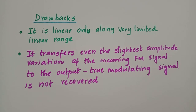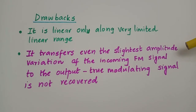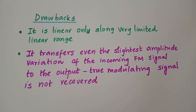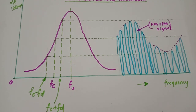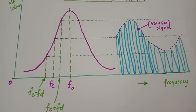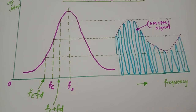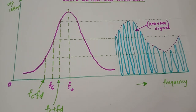The second drawback is that the slope detector transfers even the slightest amplitude variation of the incoming FM signal to the output. In such cases, we are not able to accurately recover the original modulating signal. Even though the simple slope detector is the simplest circuit for detecting FM modulated waves, it is hardly used because of these disadvantages.